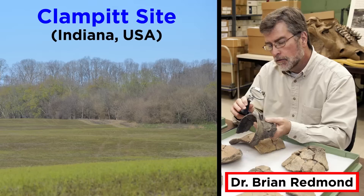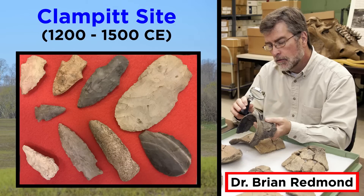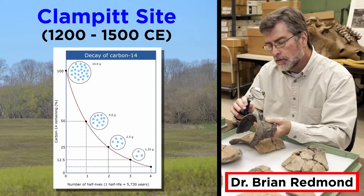Let's analyze one together. We will be analyzing an excavation report from 1994 by Dr. Brian Redmond on a site from the state of Indiana in the USA called the Clampett site. One of the first things that Dr. Redmond does is predict the time frame of the site. Some think you can't make testable predictions in archaeology, but this is not true. Dr. Redmond predicts the site to date from 1200 to 1500 based on the typologies of lithics and ceramics found at the site, as well as the architectural styles. As we will find out, radiocarbon dating validated this prediction.